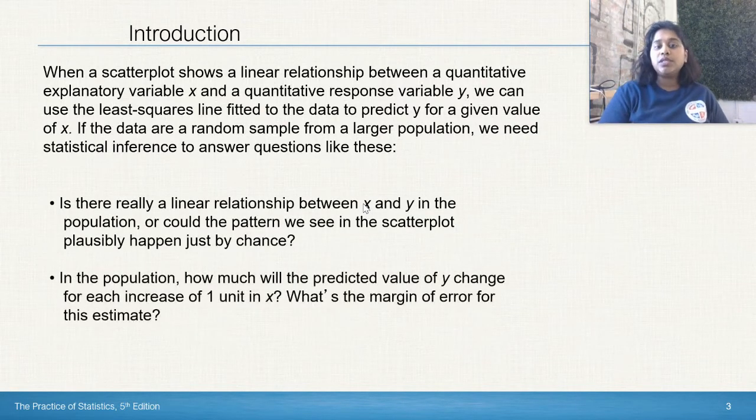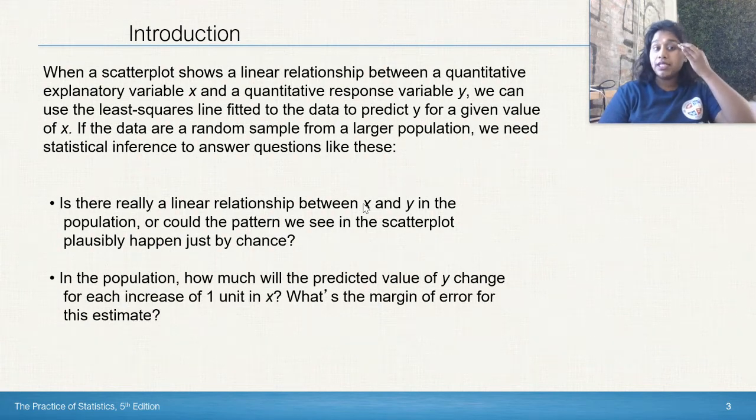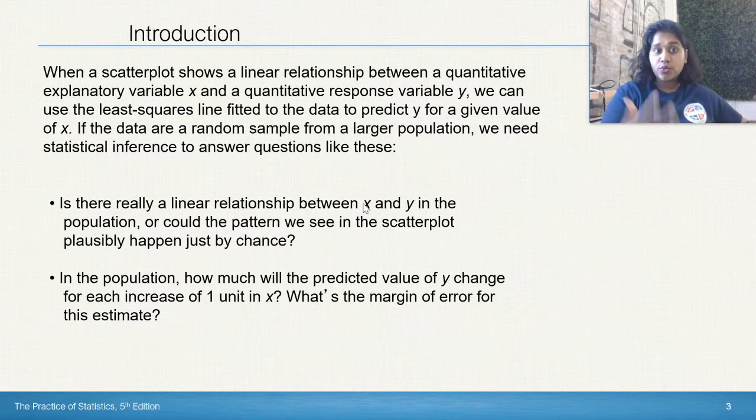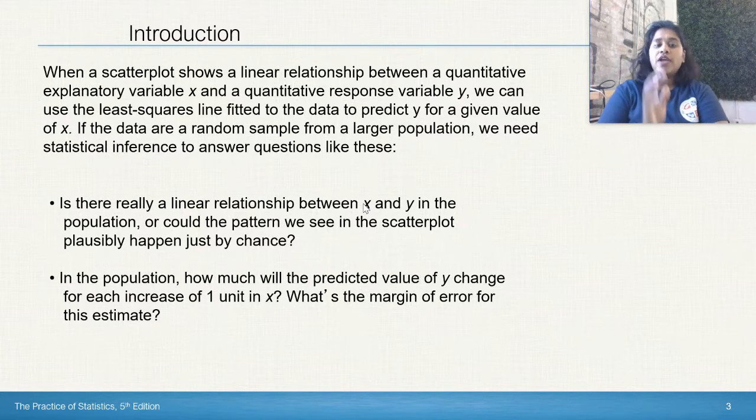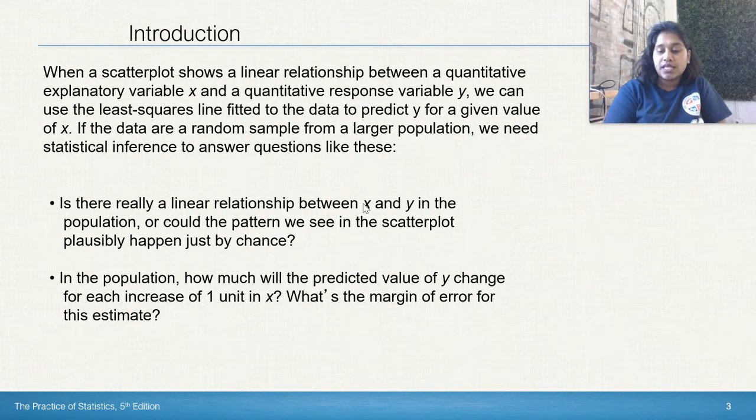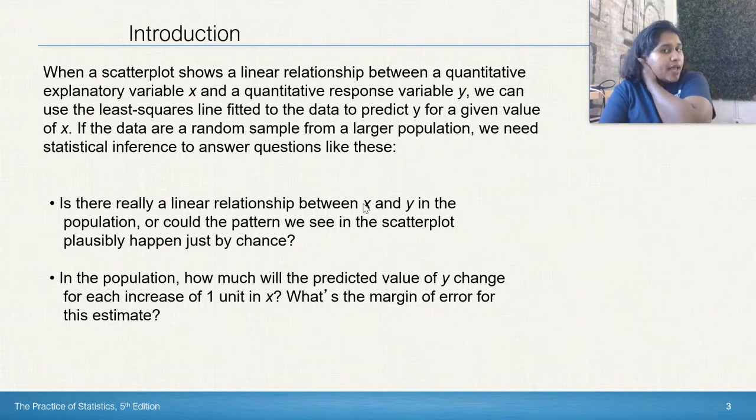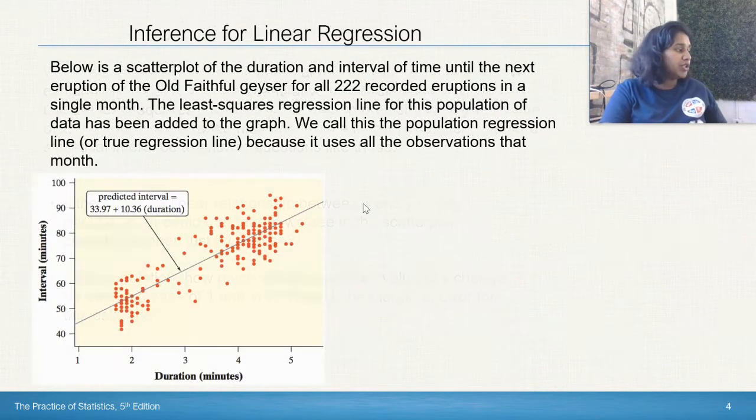Is there really a linear relationship between x and y in the population, or could the pattern we see in the scatter plot plausibly happen by chance? That's a question we could ask. And finally, in the population, how much will the predicted value of y change for every increase of one unit in x? What's the margin of error for this estimate?